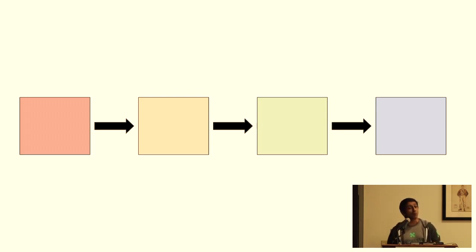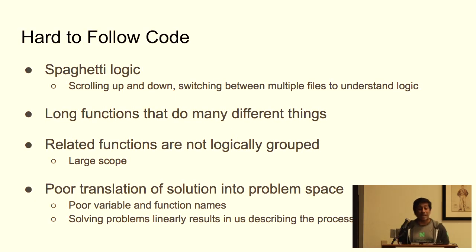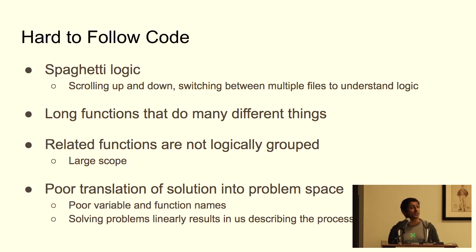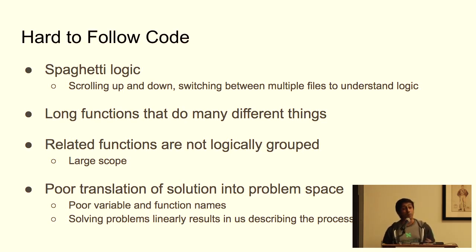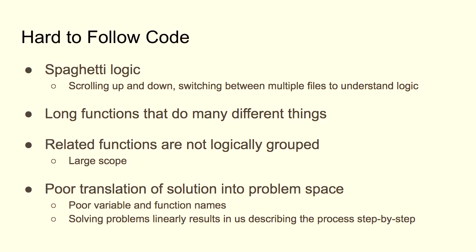But if we have too many if statements, it results in code that is hard to follow and even harder to modify. What does it mean to have code that's hard to follow? We can have spaghetti logic — scrolling up and down, tabbing between different modules, trying to follow the logic to understand what's going on. It's also long functions that do many different types of things, related functions that are not logically grouped together, and poor variable or function names.